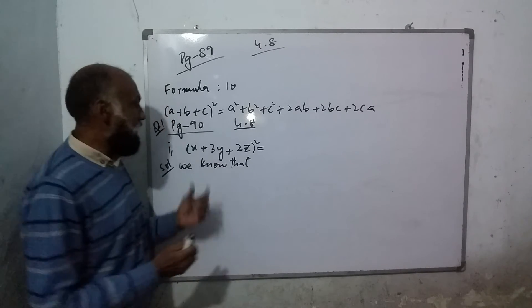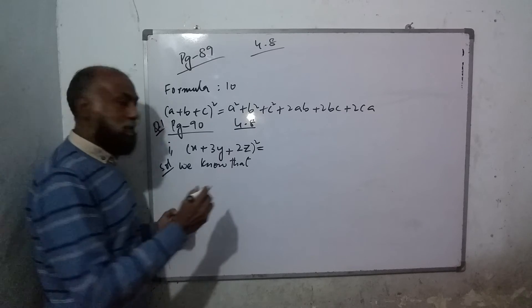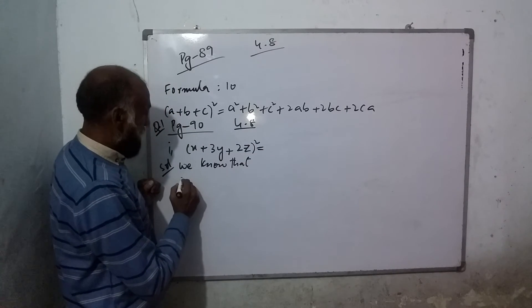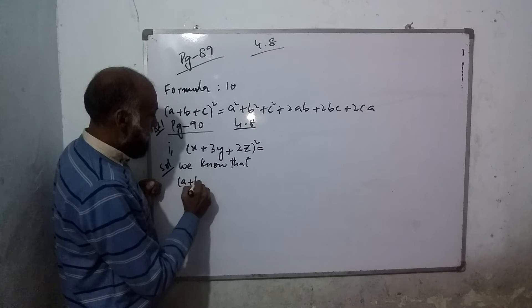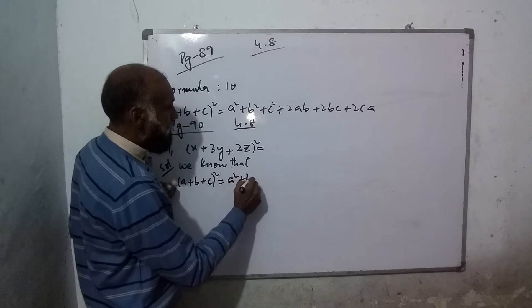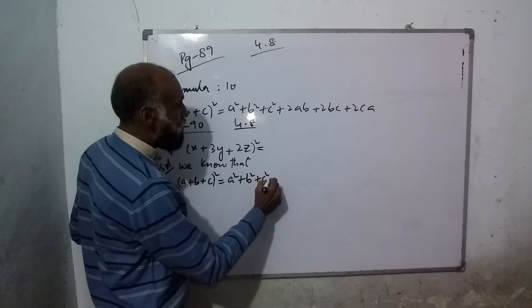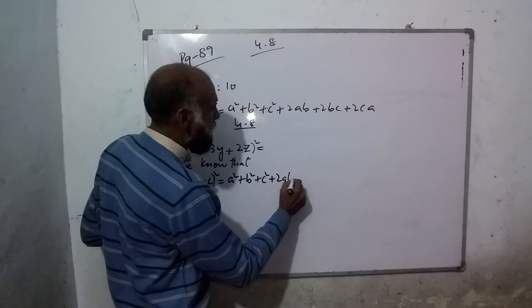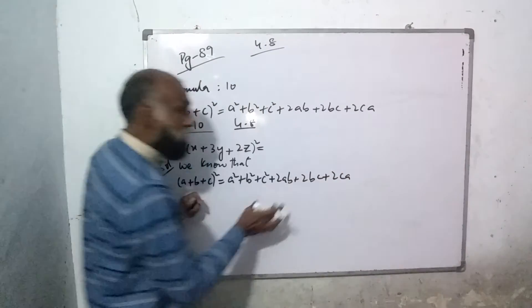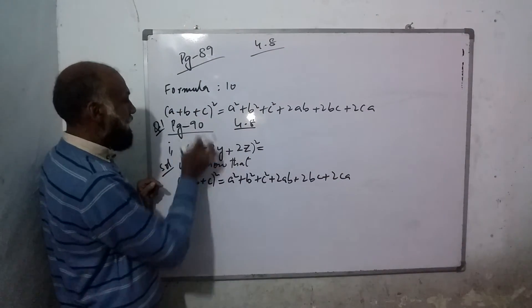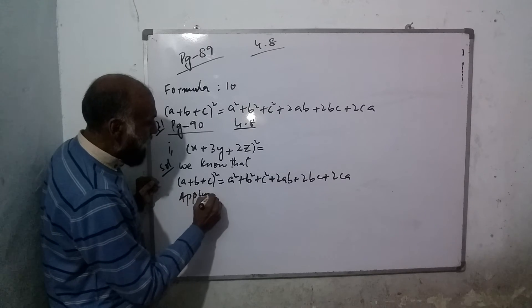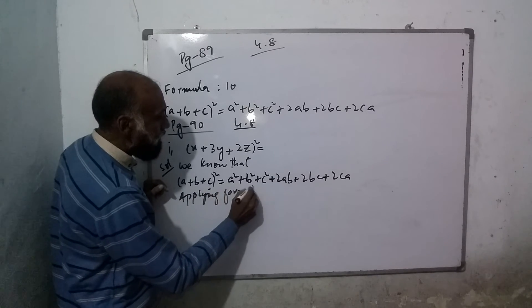We write the formula here. For (a+b+c)² we have a² + b² + c² + 2ab + 2bc + 2ca. Now we substitute.